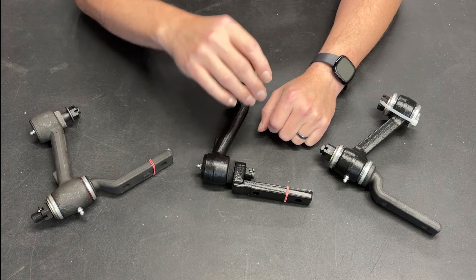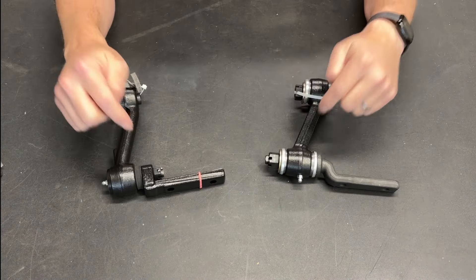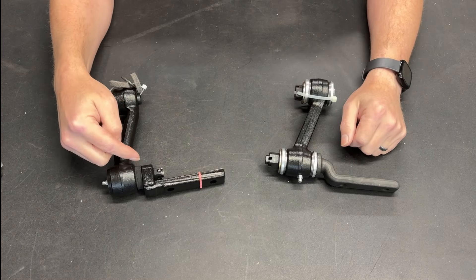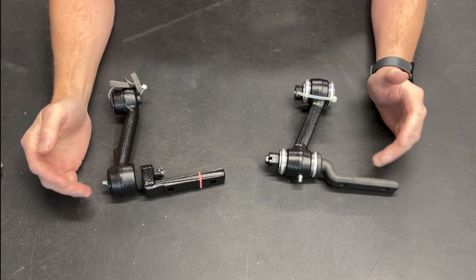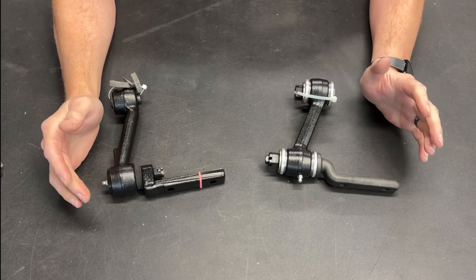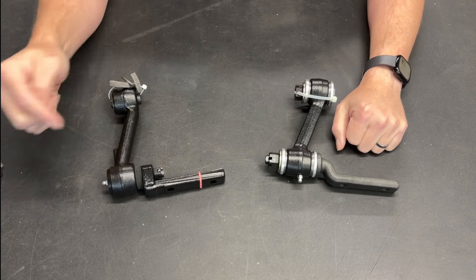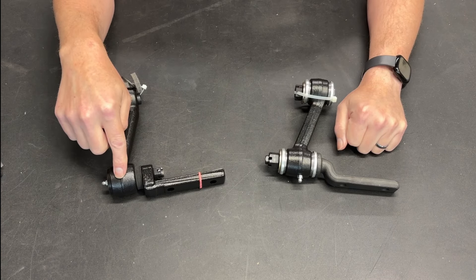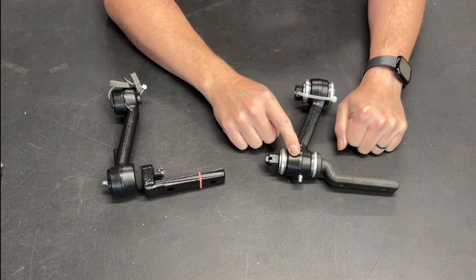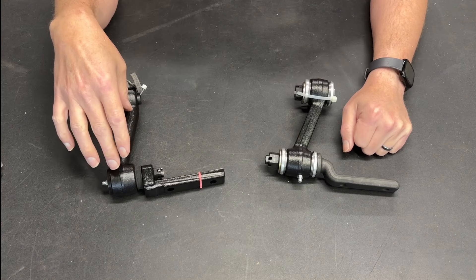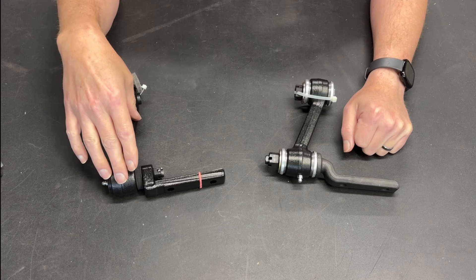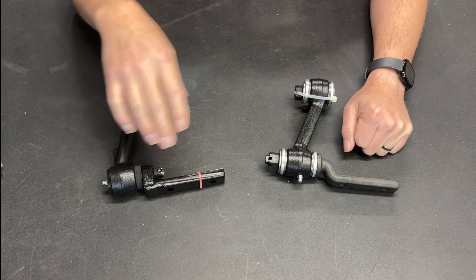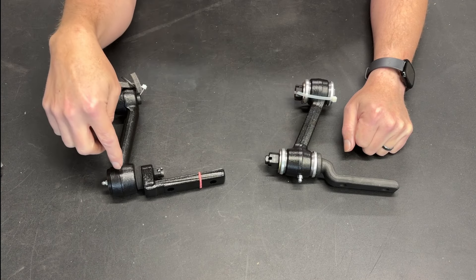Now here we have a 67 through 70 manual steering roller idler arm. They look fairly similar but they are definitely different components. This is Open Tracker Racing Products budget roller idler arm, and this is what they refer to as their Trans Am roller idler arm. While this idler arm is a significant improvement over the rubber bushing, it is still not the improvement that this one is.